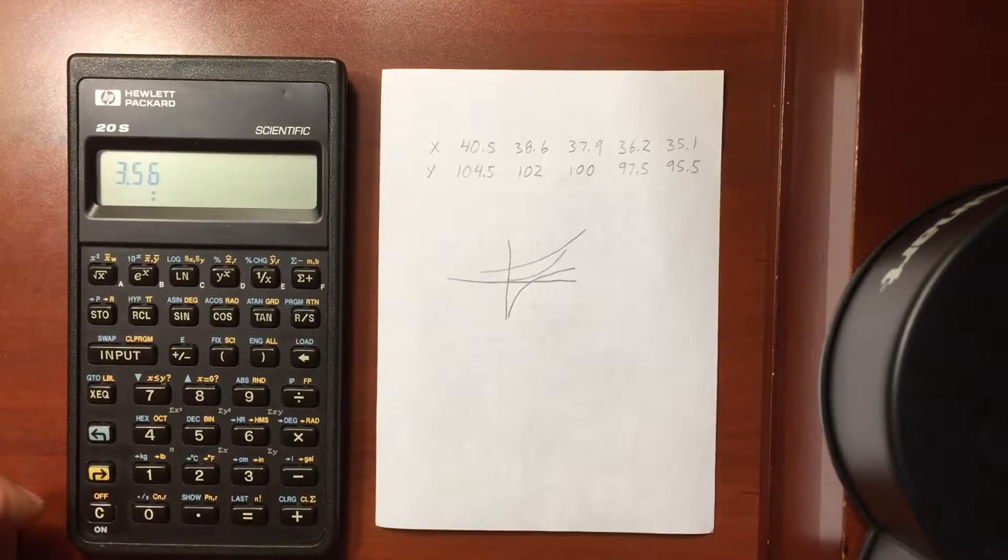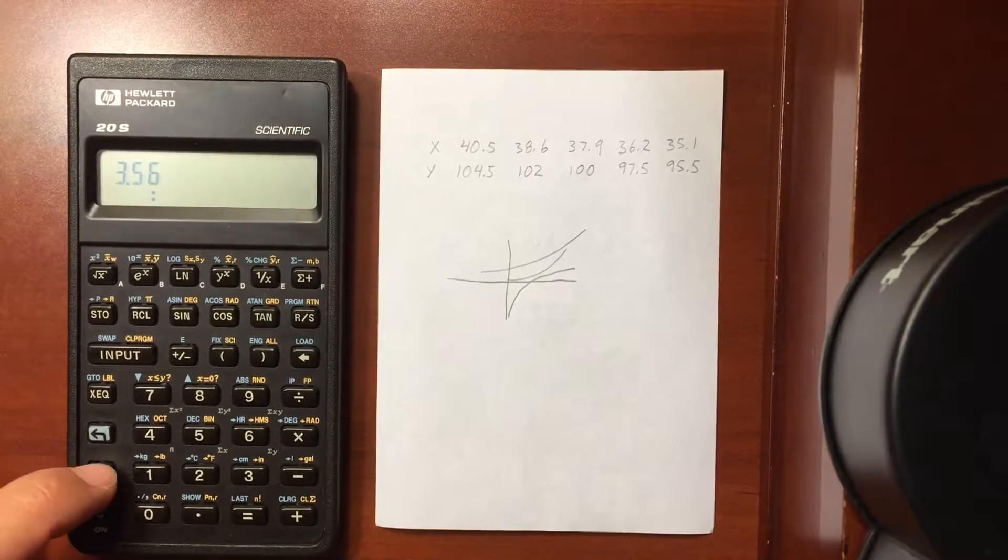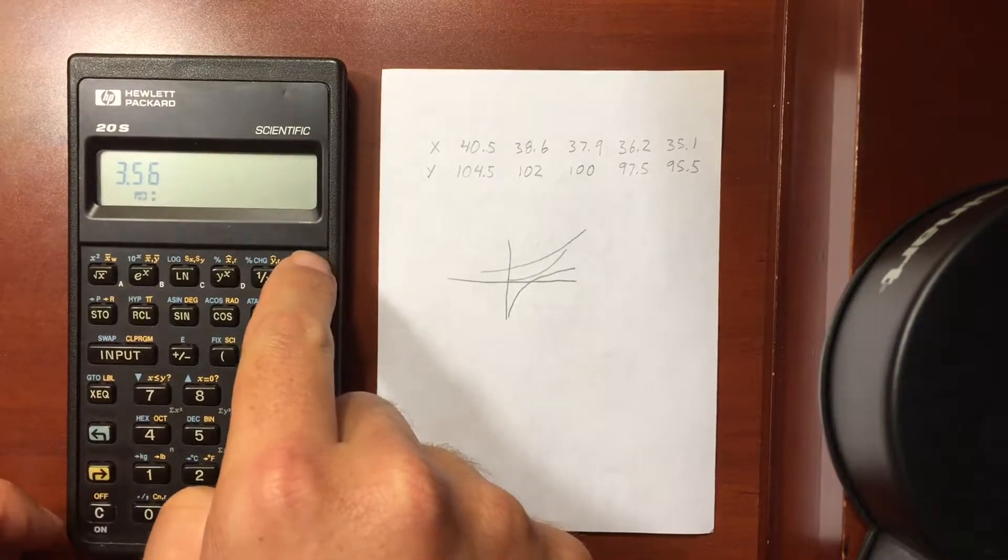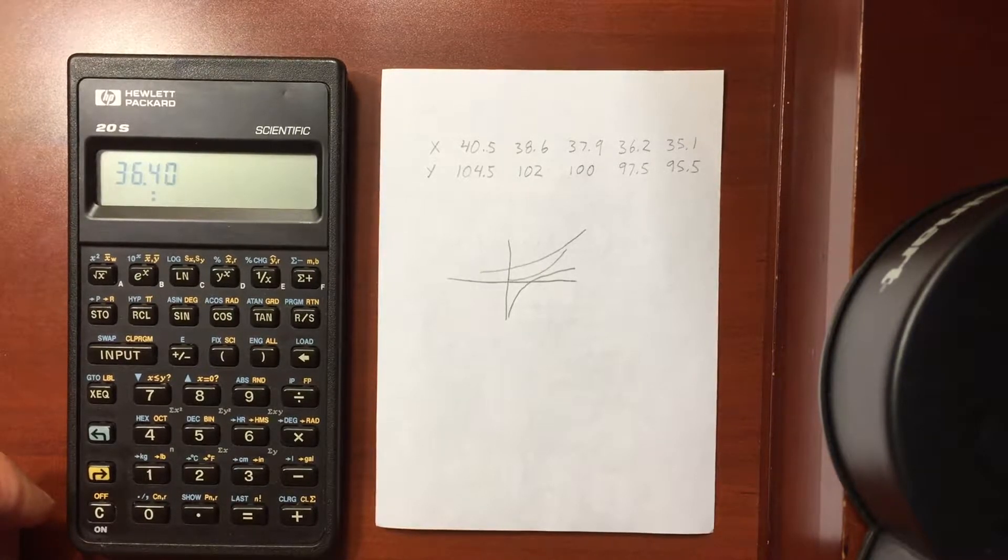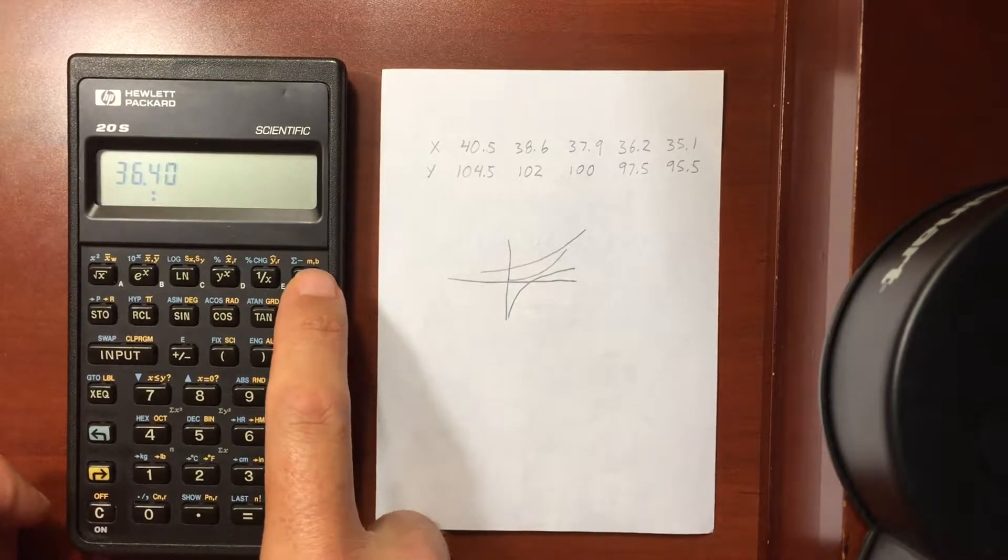This also has done a linear regression, so if I look at M and B here, that shows me the slope of these points that have been plotted out. If I do swap, that shows me the Y intercept, so M and B.